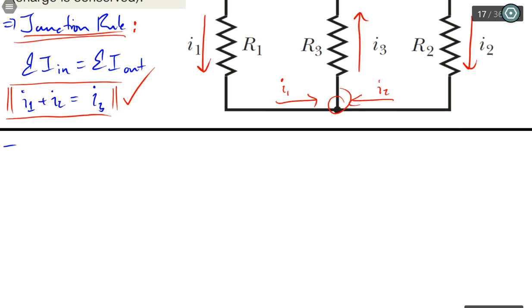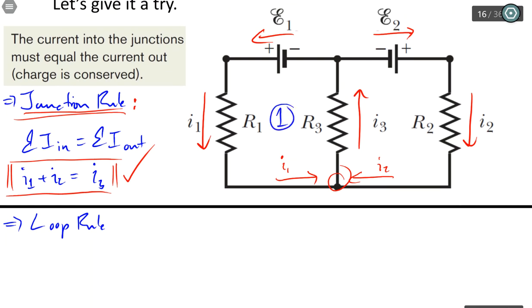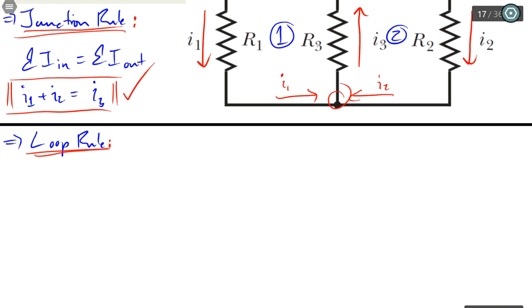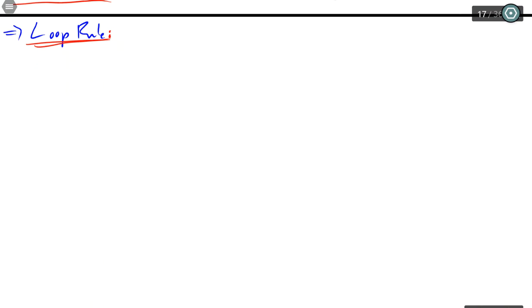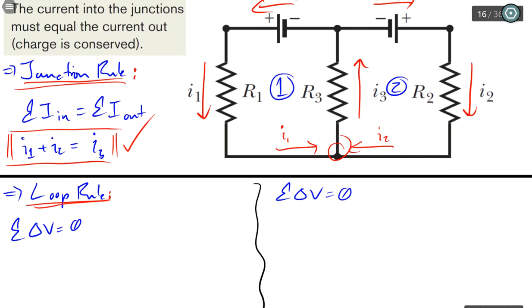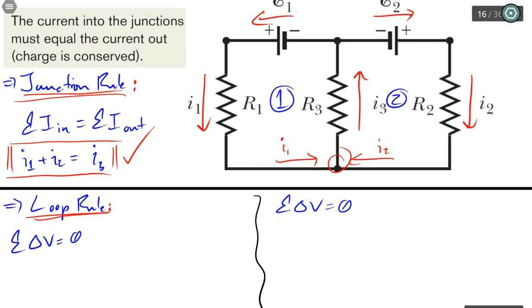So now we're going to go directly into the loop rule. And remember, I labeled this as loop 1 and loop 2. So don't get loopy. Follow along. Let me divide this into two spaces. And I'm going to use the formula where the sum of all the potential drops in that loop should equal to zero. So for loop 1, I have to choose a direction. It's important that you have to choose a direction first. So it looks like everything is going counterclockwise. So this is CCW.